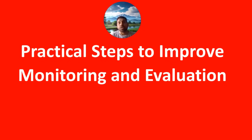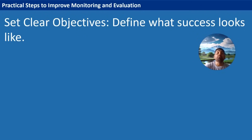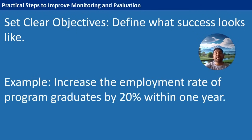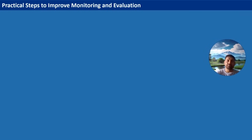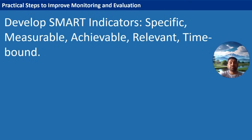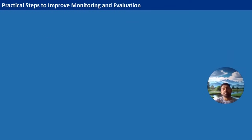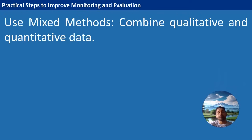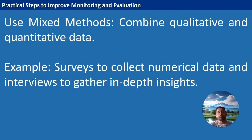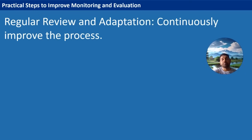Now let's discuss practical steps to improve monitoring and evaluation. First, set clear objectives — for example, aim to increase the employment rate of program graduates by 20% within one year. Second, develop SMART indicators that are specific, measurable, achievable, relevant, and time-bound — for example, the percentage of graduates employed within six months. Third, use mixed methods to gather both qualitative and quantitative data, such as surveys for numerical data and interviews for in-depth insights.